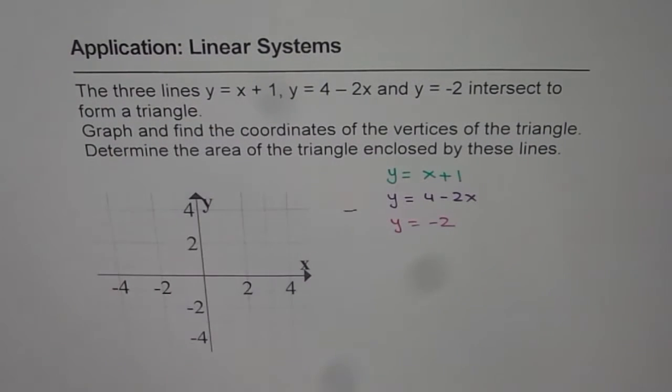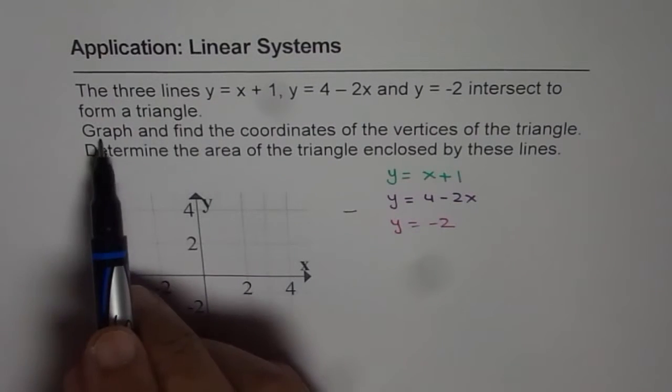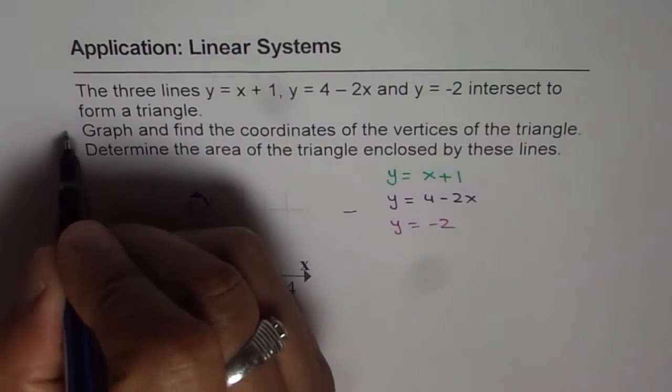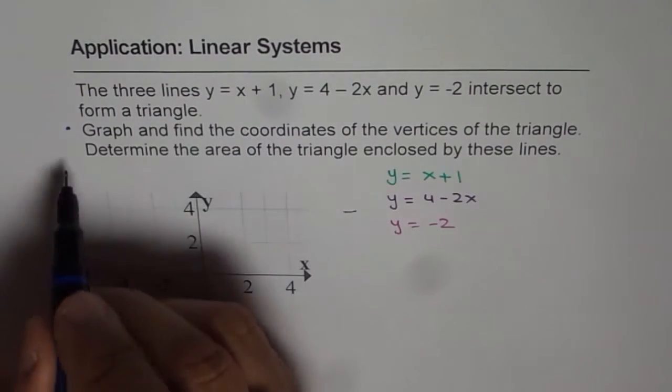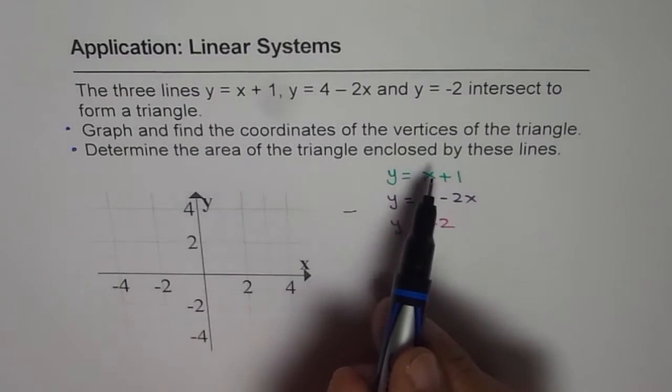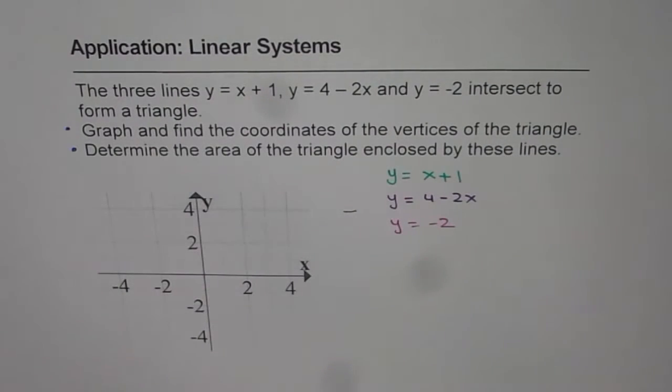We need to graph them and then find their points of intersection. So two lines will intersect at a point and it seems that they form a triangle. So let us first graph them and then find the vertices of the triangle. We have to graph and find coordinates of vertices, that's the first part. And the second part is to determine the area of triangle enclosed by these lines. So let's start by graphing